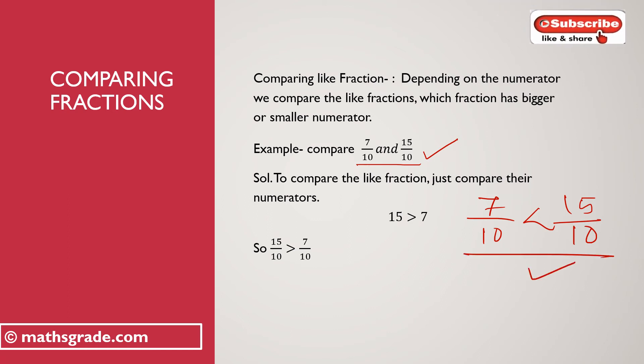Or we can also write: 15 divided by 10 is greater than 7 divided by 10. When comparing like fractions, we check the numerator only — whether one numerator is bigger or less than the other — and then compare the fractions accordingly.